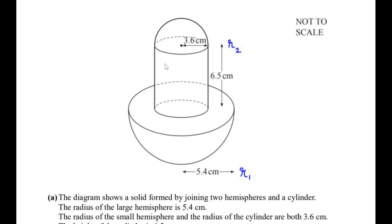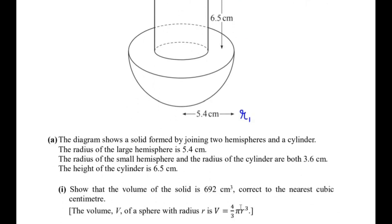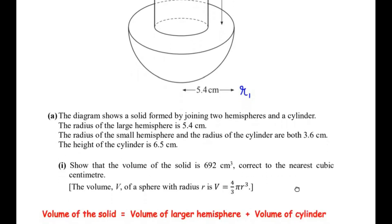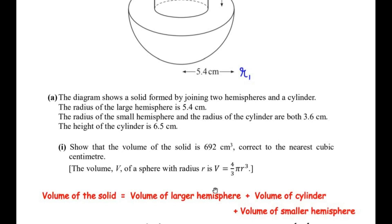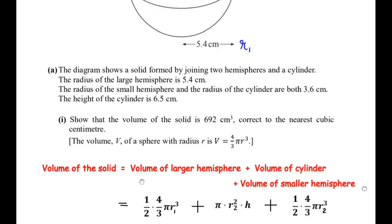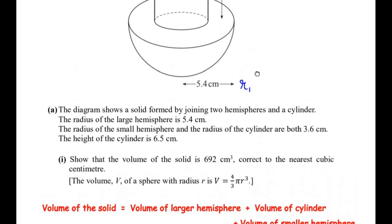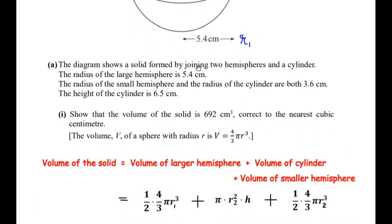To find the total volume we add the volumes of all the combined solids: volume of the larger hemisphere plus volume of the cylinder plus volume of the smaller hemisphere. Since the volume of a sphere is (4/3)πr³, the hemisphere is half of a sphere. So the volume of the larger hemisphere is (1/2) × (4/3) × π × r1³.